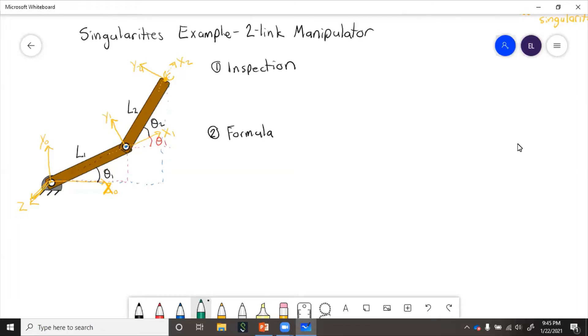Well, when it's either completely locked out, so it becomes like one single link, or when it's doubled back on itself and so the tip basically can't even move. So that would be when theta two equals zero or pi.